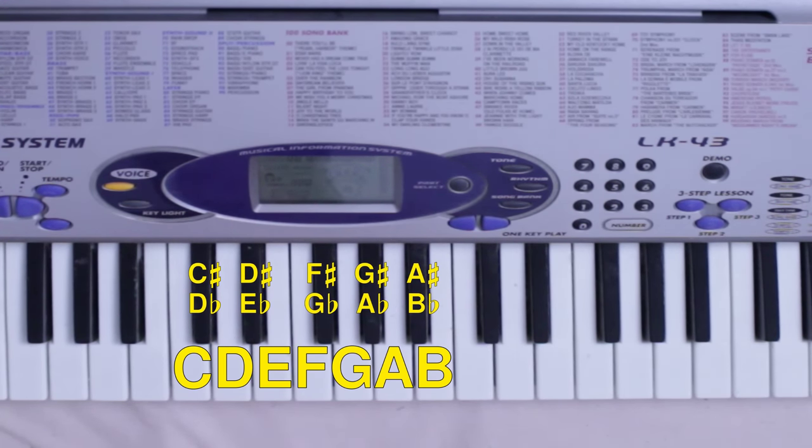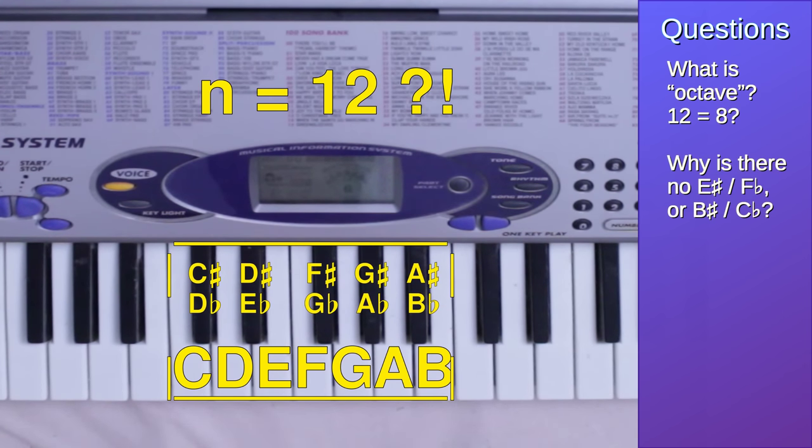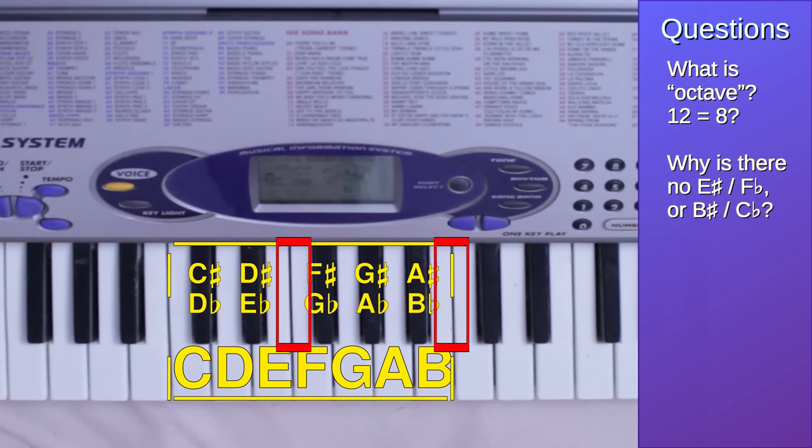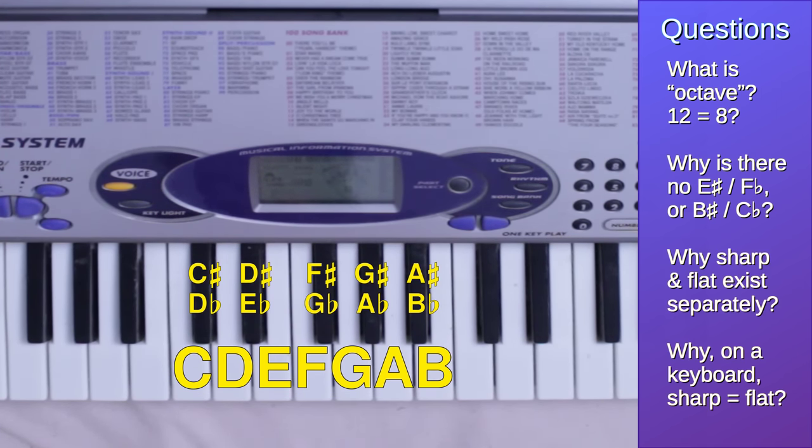This raises several questions. Octave is derived from a word that means eight. Why are there twelve notes? Why are there no black keys between E and F, and between B and C? Why is there only a single key for both sharp and flat? Why does the concept exist? I will answer all of these questions.